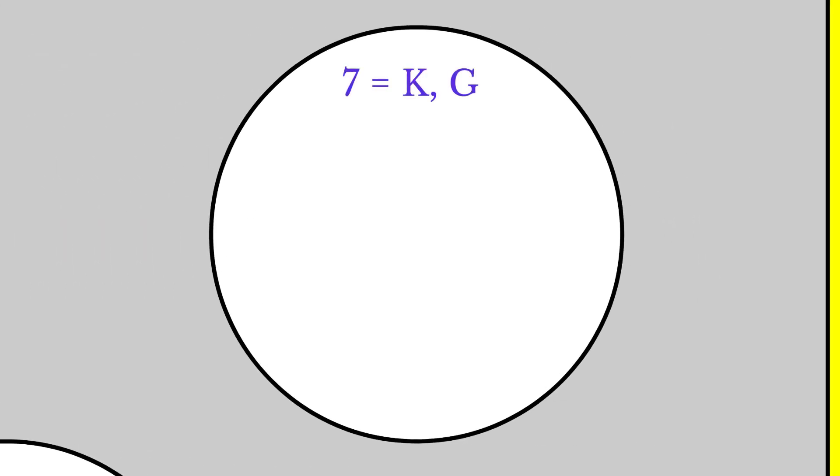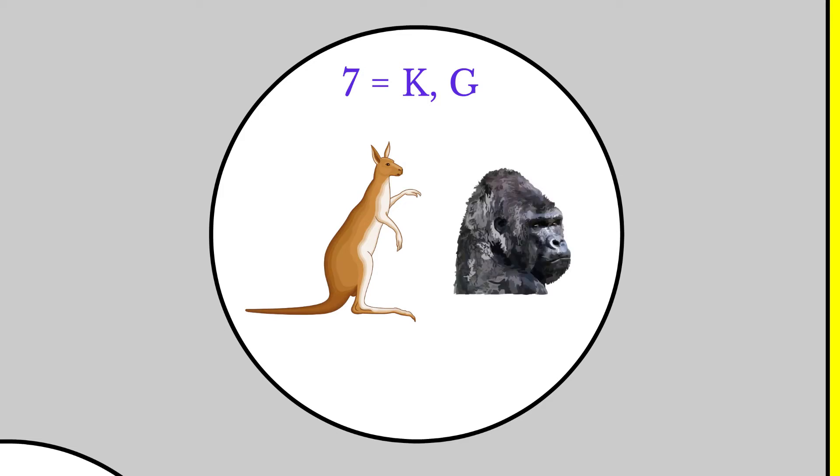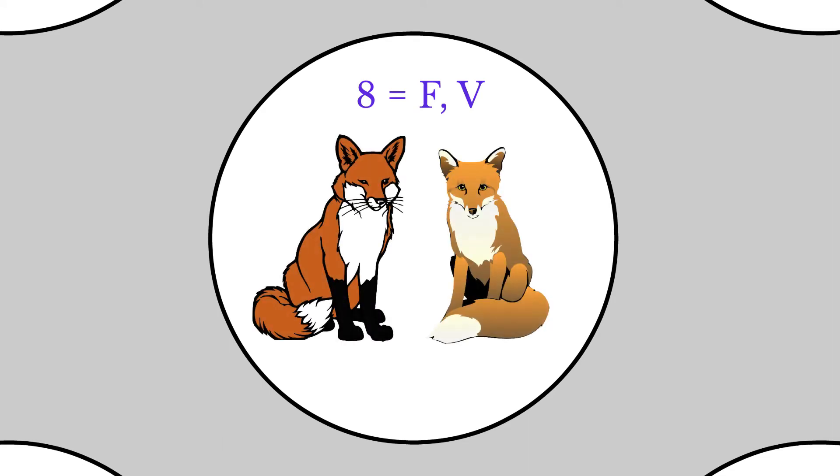Number seven is replaced by velar stops k and g. We have a kangaroo and gorilla. Number eight is replaced by labial dental fricatives, f and v. We'll use a fox and a vixen.